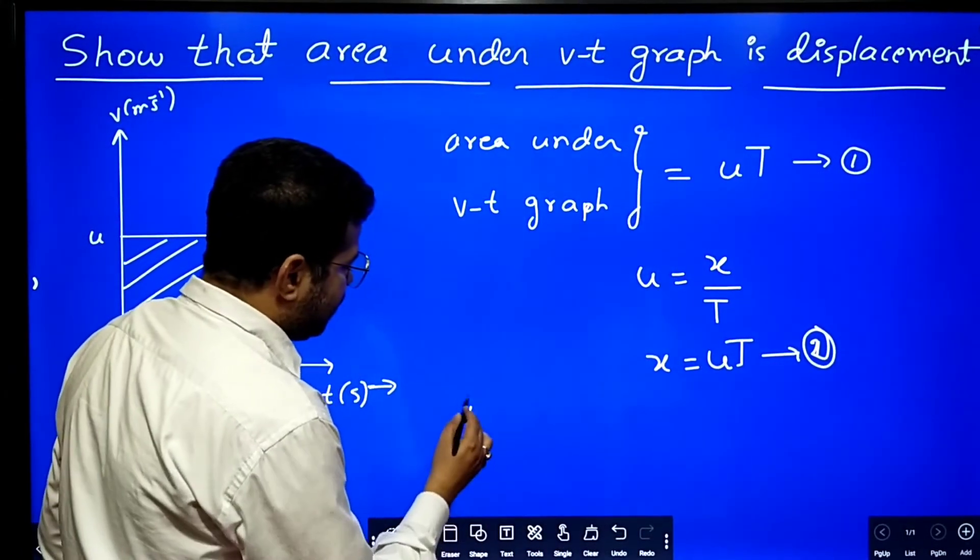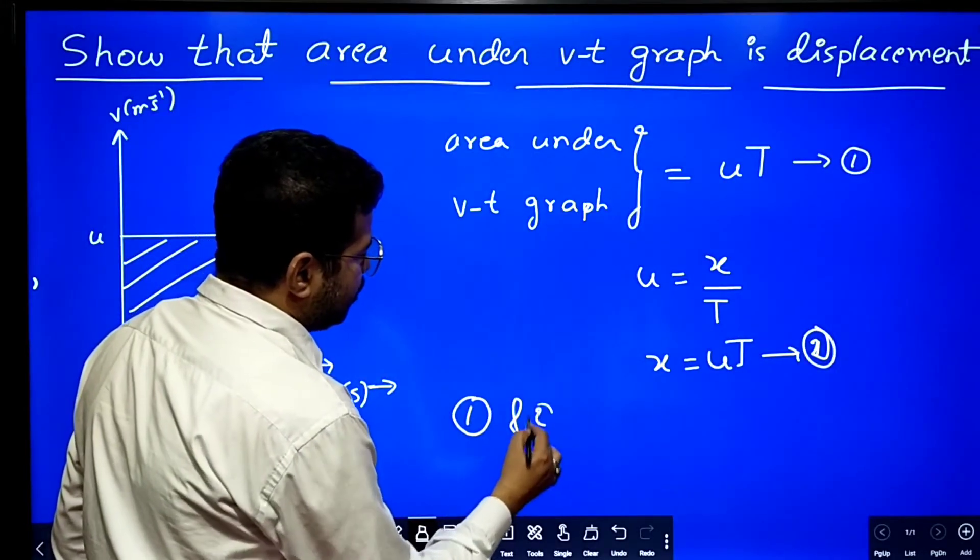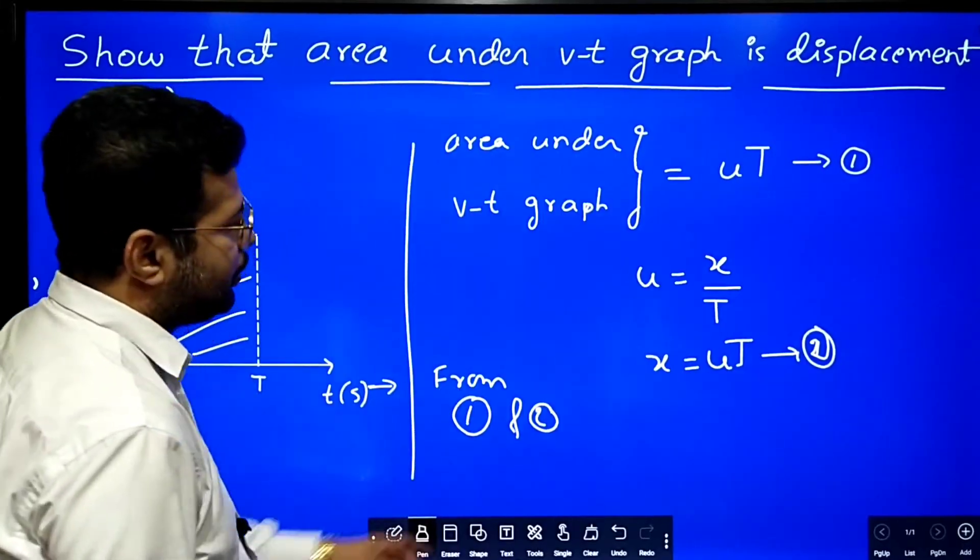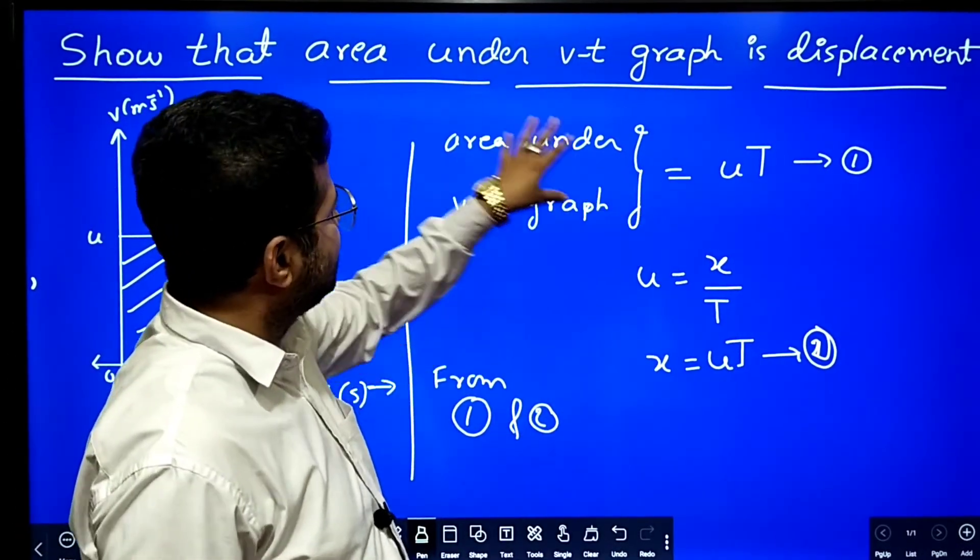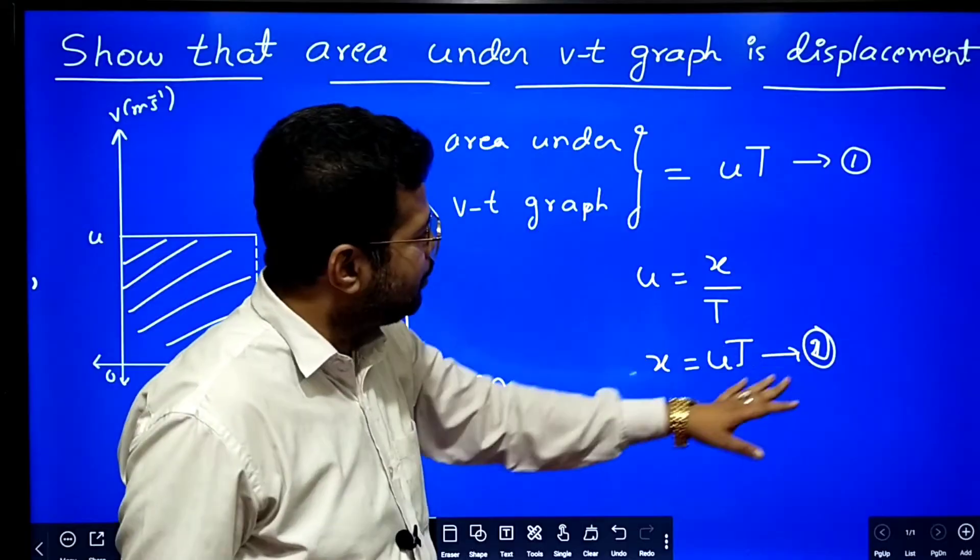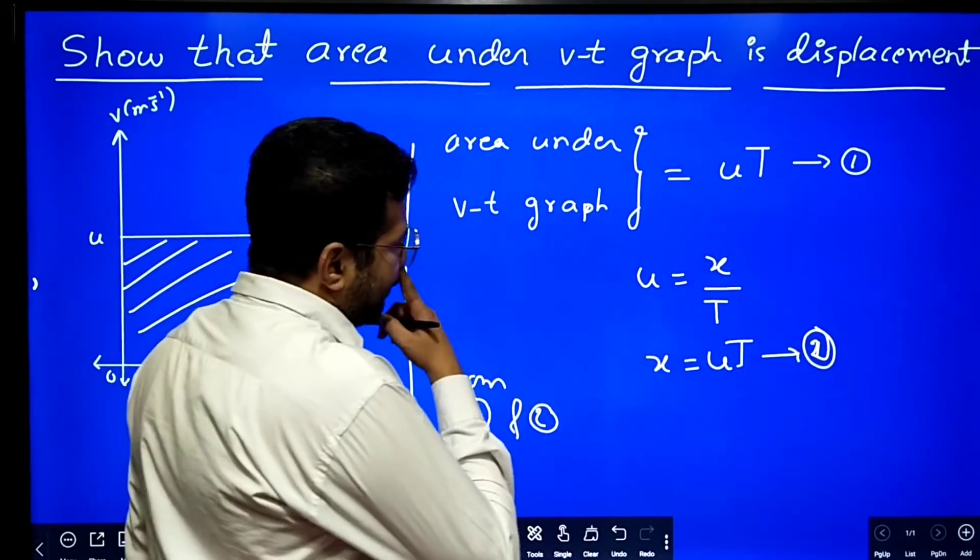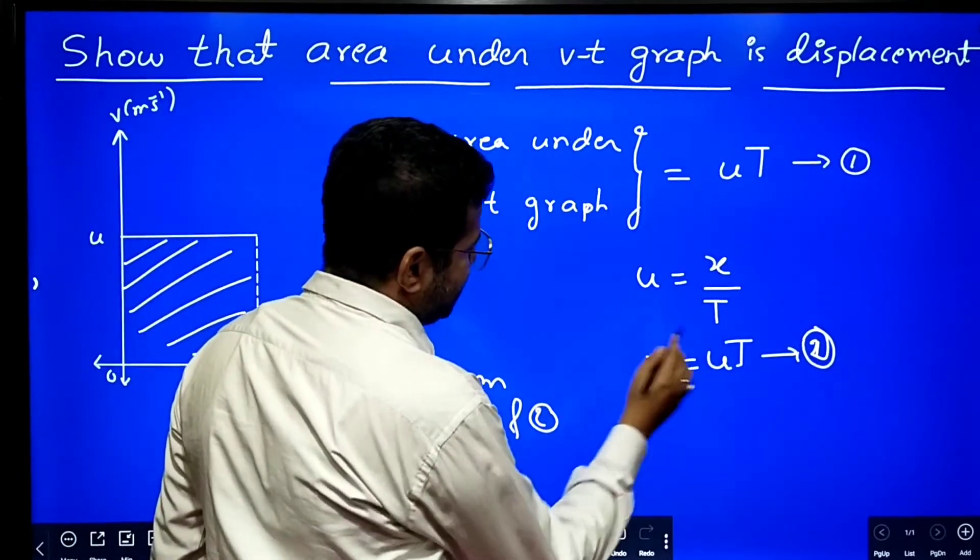Then when you look at equation number one and equation number two, from equation number one and two, what do I get? Equation number one says that area is equal to u into t. Equation number two says that displacement is equal to u into t. So therefore area under vt graph gives displacement.